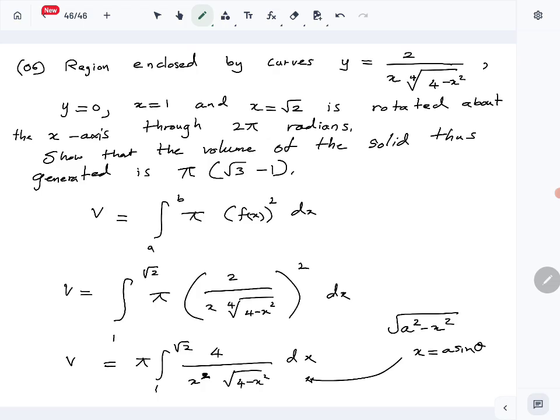Here we use the substitution x equals a sine theta or a cosine theta. We'll take x to be 2 sine theta, then dx is 2 cosine theta d theta. When x equals 1, 1 equals 2 sine theta, so sine theta equals 1/2, which means theta equals π over 6.